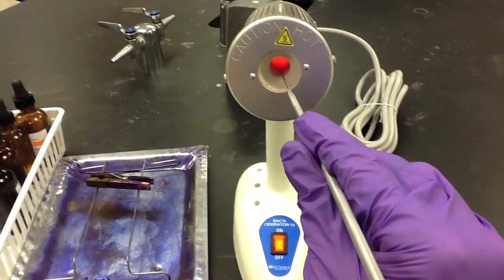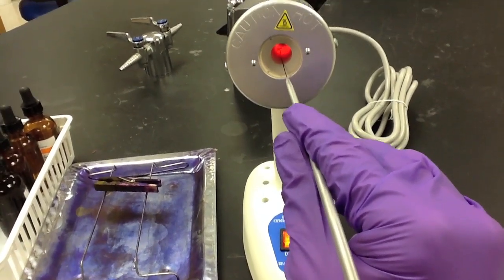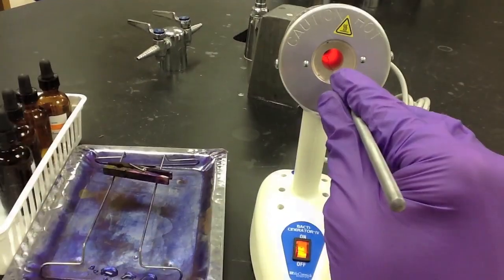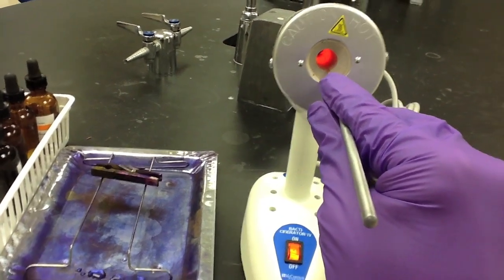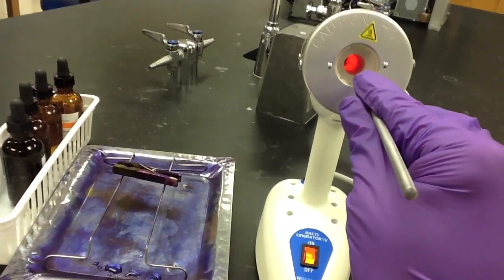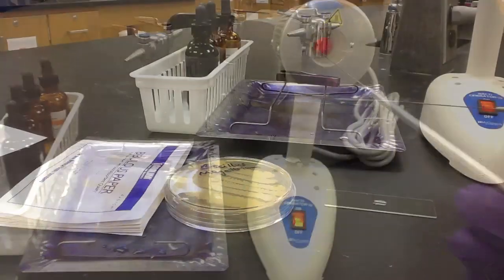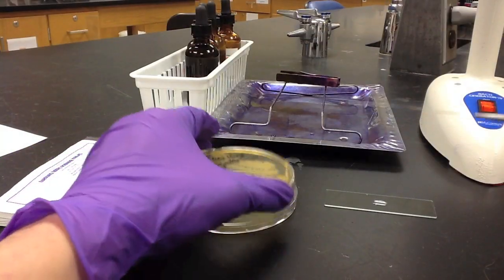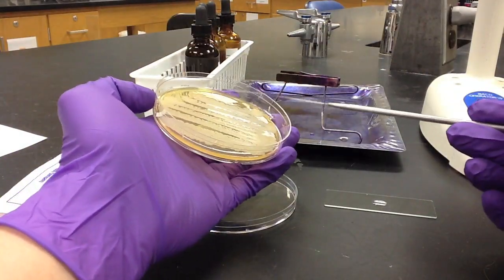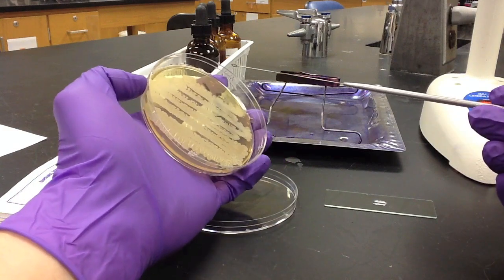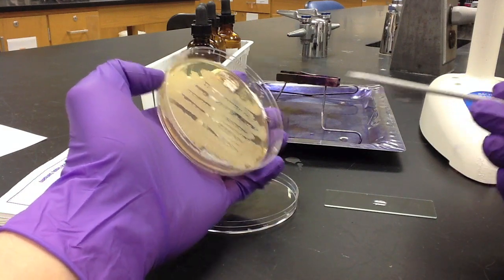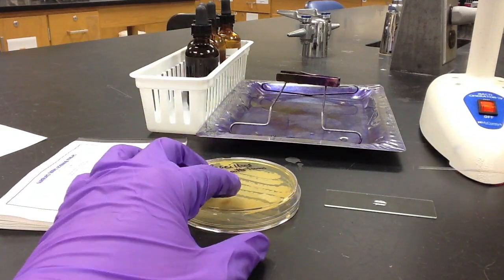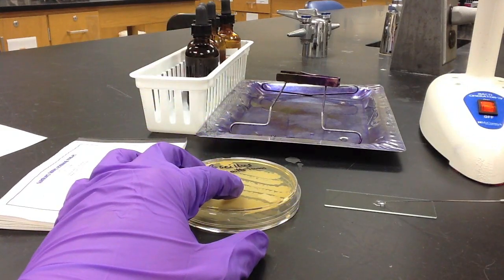We then place our inoculating loop into the incinerator to sterilize it. Once it reaches the appropriate temperature and is glowing orange, we remove it. Before coming into contact with the cells, we must first cool the loop by touching a blank piece of agar. We can then come into contact with the cells once the loop is cool, and after we've picked our cells, we'll spread them and disperse them in the droplet of water.